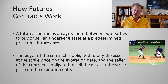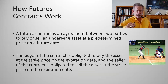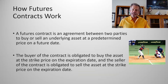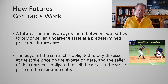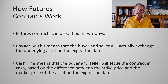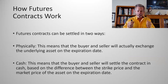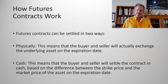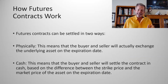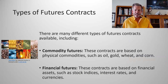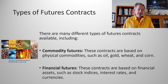The buyer of the contract is obligated to buy the asset at the strike price and the expiration date. The seller is obligated to sell the asset at the strike price. You can settle them two ways: physically, where you exchange the underlying asset, or with cash on the expiration date.